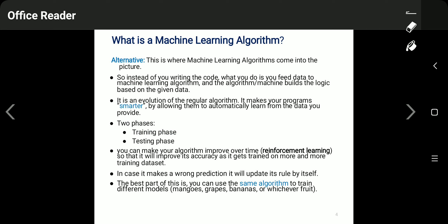This is where machine learning algorithms come into the picture. Instead of writing your own code, you feed the data to the machine learning algorithms, and the algorithm builds the logic based on the given data. You don't need to write extra code to find patterns or features from the dataset — the machine learning algorithm itself is able to find out the patterns, features, and logic. It is an evolution of regular algorithms that makes your programs smarter by allowing them to automatically learn from the data.